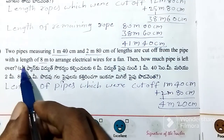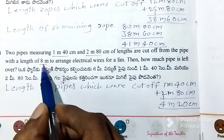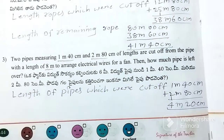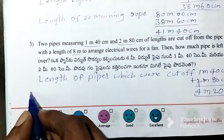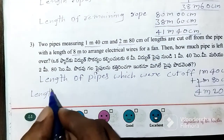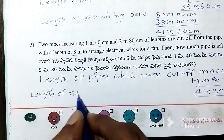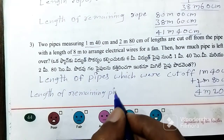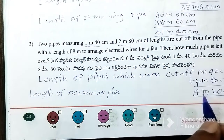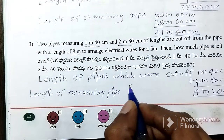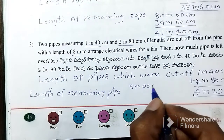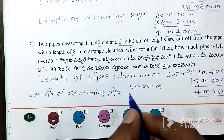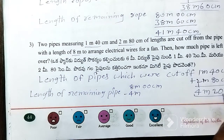8 meters long. The length of the remaining pipe: 8 meters minus 4 meters 20 centimeters.